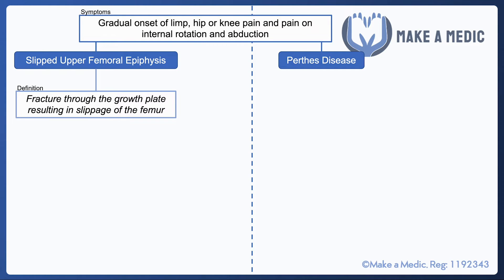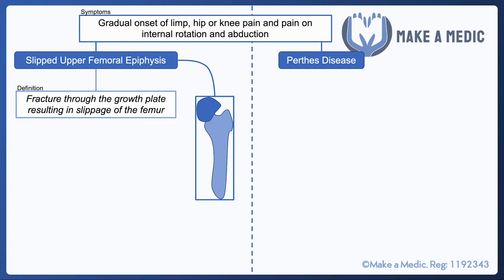Slipped upper femoral epiphysis is a condition in which you get a fracture through the growth plates of the head of the femur, meaning that the top part of the head of the femur will slip relative to the rest of the femur. It's sort of like an ice cream cone kind of appearance — it looks a bit like this.